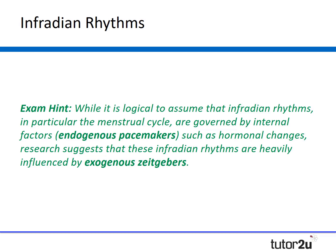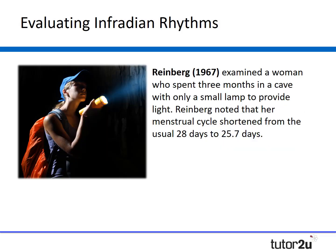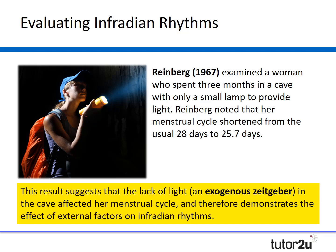Research suggests that the menstrual cycle is to some extent governed by exogenous zeitgebers — external factors. Reinberg in 1967 examined a woman in a case study who spent three months in a cave with only a small lamp for light. He noted that her menstrual cycle shortened from 28 days to roughly 25.7 days. These results suggest that the lack of light, an exogenous zeitgeber, affected her menstrual cycle and therefore demonstrates the effect of external influences on infradian rhythms.